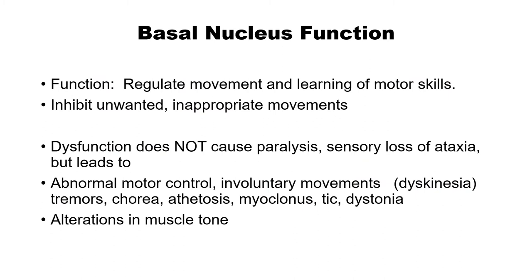The basal nucleus functions to regulate movement — it inhibits inappropriate involuntary movements, and indirectly affects voluntary movements as well, helping us learn fine motor skills. Importantly, dysfunction does not lead to paralysis; it leads to abnormal motor control. We see this as tremors, chorea (Huntington's chorea), athetosis, myoclonus, tics, and dystonia — all forms of dyskinesia. We also see alterations in muscle tone with basal nucleus dysfunction.